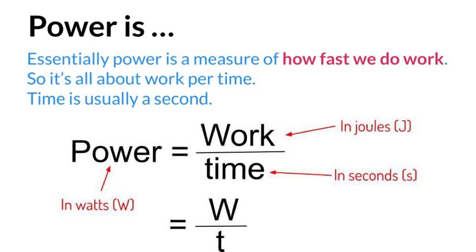If we want to think about power, we think about how quickly it's happening. In other words, the rate we are doing work. That means we have to think about work per time.